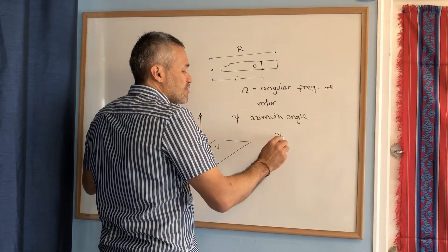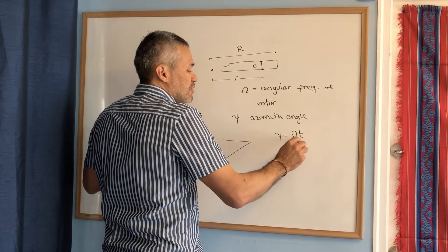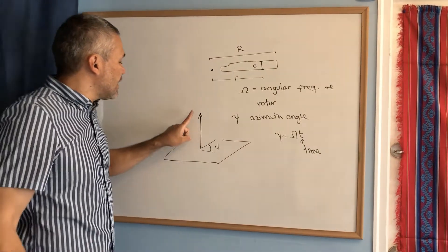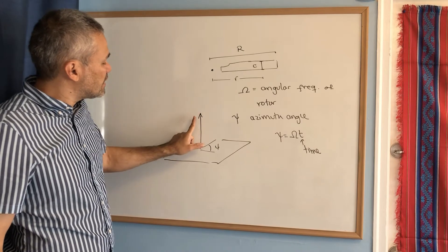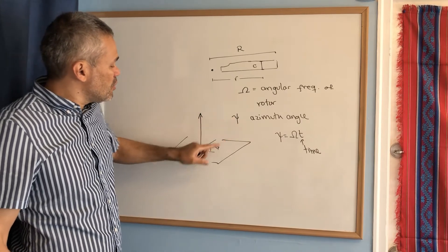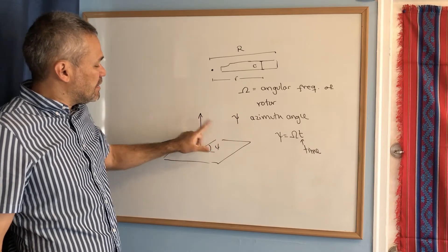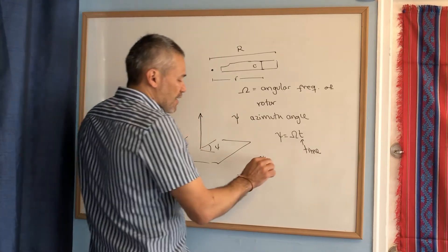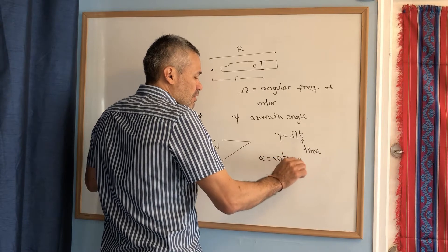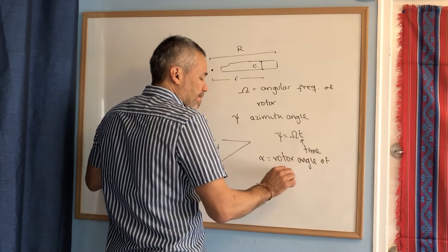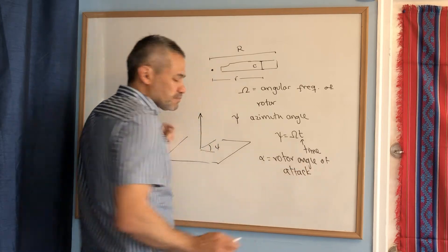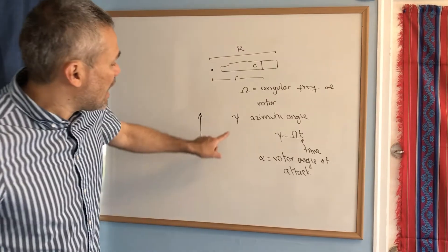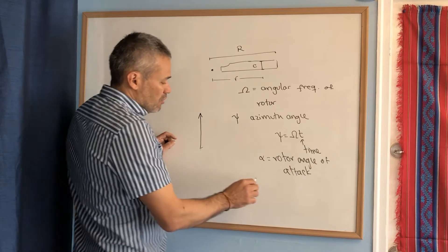The azimuth angle is connected with omega and the relation is simply omega times t, where t is time. Some helicopters tilt the rotor slightly, so the azimuth angle is measured not in the horizontal plane but in a slightly tilted one. That tilting angle is called alpha, and this is the rotor angle of attack.